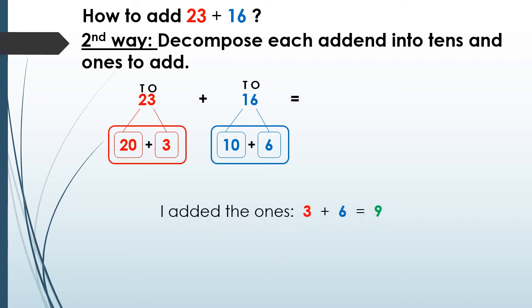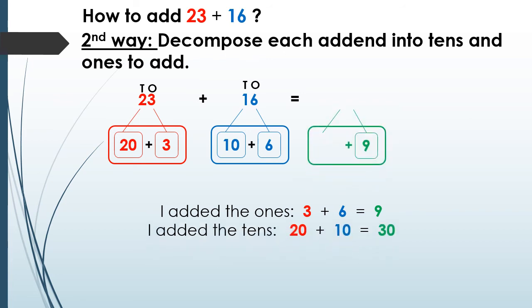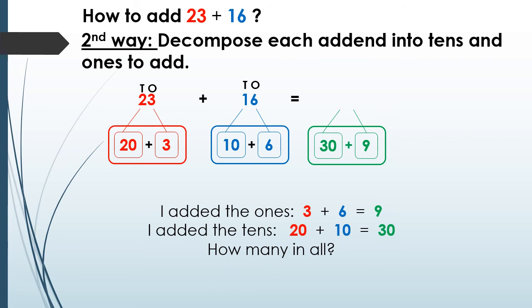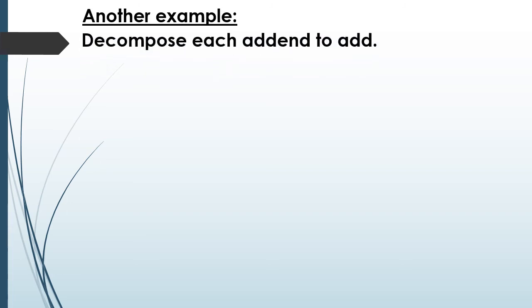23 becomes 20 plus 3. What about 16? That becomes 10 plus 6. Now I add the ones: 3 plus 6 equals 9. I add the tens: 20 plus 10 equals 30. Use these two answers together — 30 plus 9 equals 39. So 23 plus 16 equals 39.